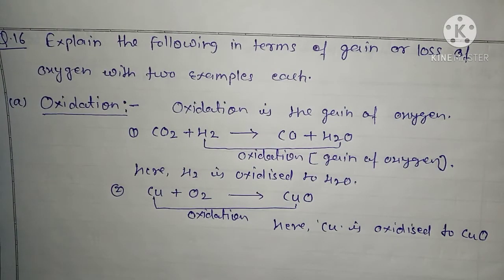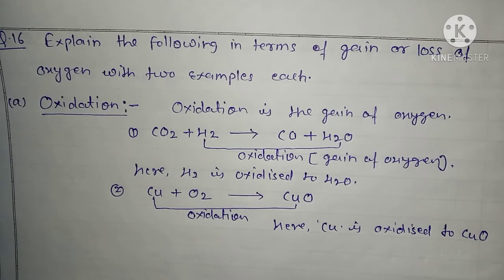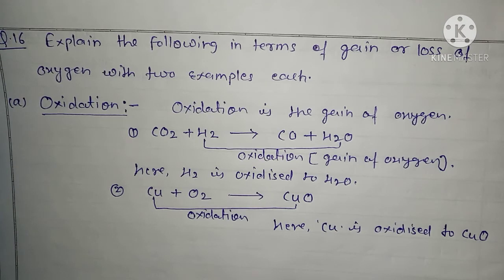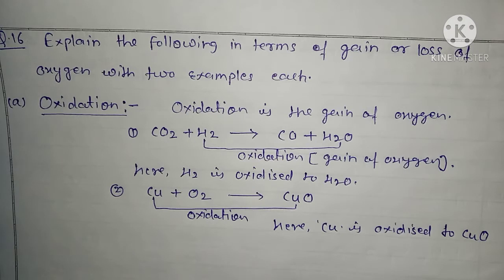Hello students, I am Achilles Meena. In this video I will discuss question number 16 of class 10th, chapter number one — Chemical Reactions and Equations. Question number 16 is: explain the following in terms of gain or loss of oxygen with examples. Friends, this question has two parts — oxidation and reduction.